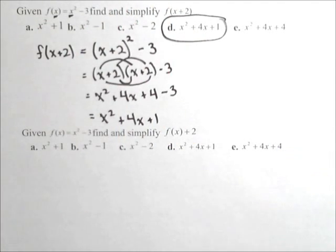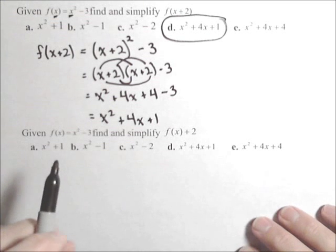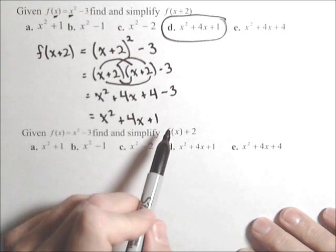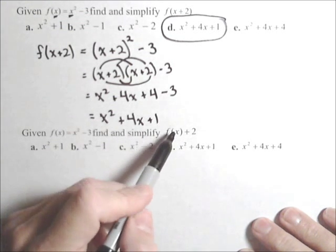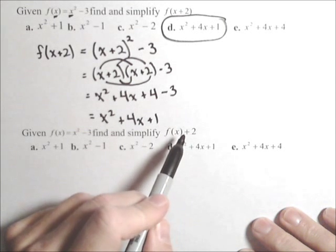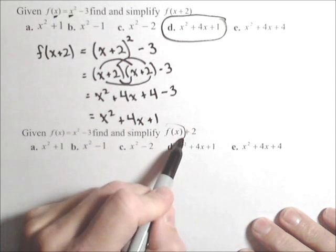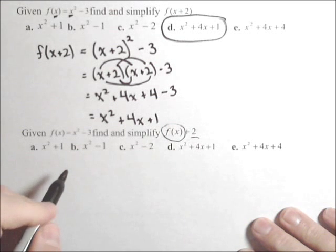And so we got d for that one. Now, in the second one, notice how it's f of x plus two, so when we say it, it sounds the same, but the two is now outside the parentheses. So this is taking our original function and then adding two onto the end.